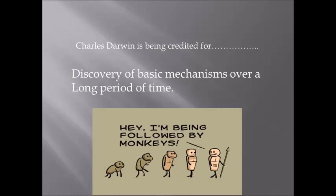Darwin was very focused, and over a period of over 20 years, he developed his theory of how species can change and adapt into new plant or animal forms.